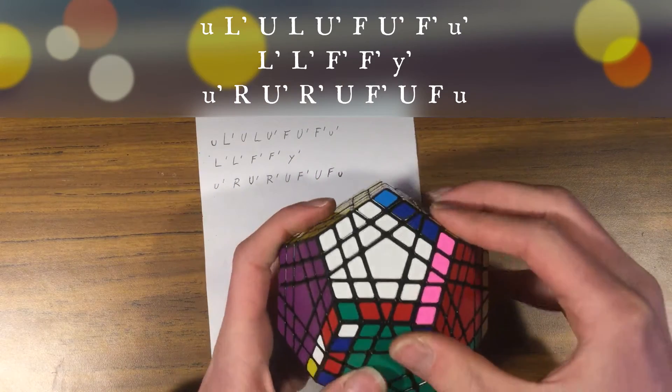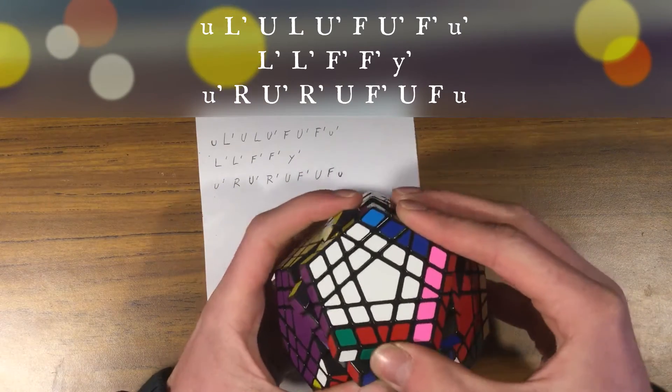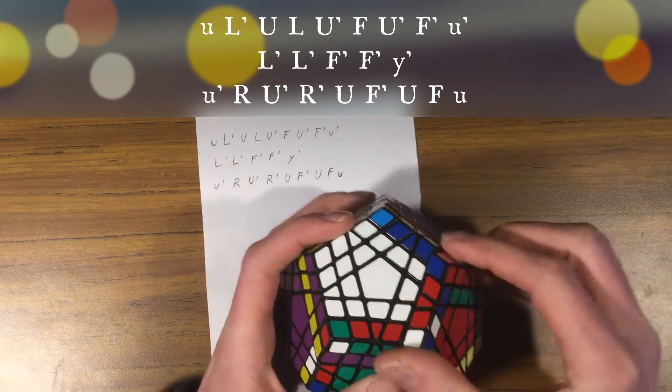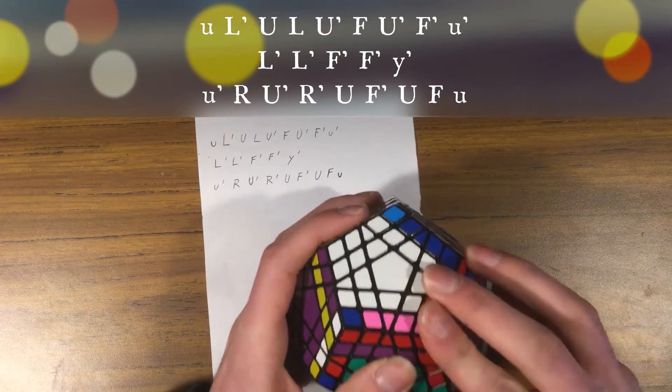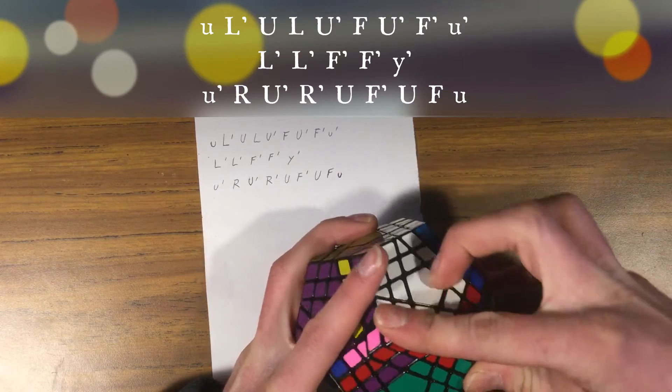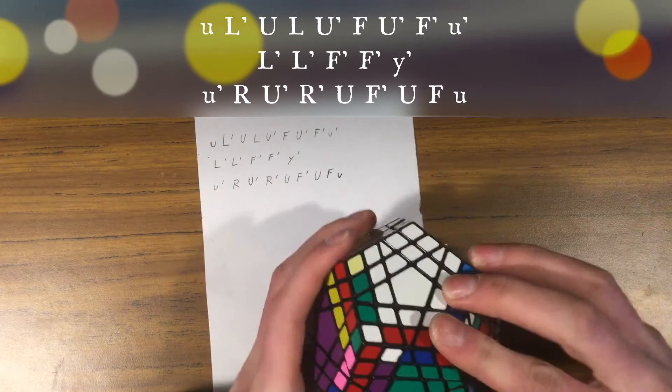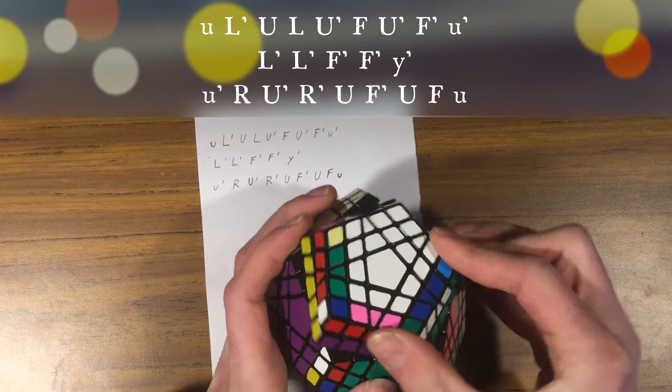And then middle layer upper inverse, right, upper inverse, right inverse, upper, front inverse, upper, front, upper inverse.